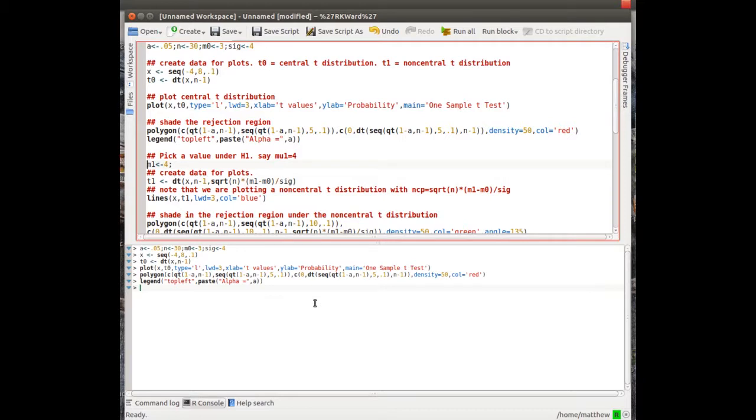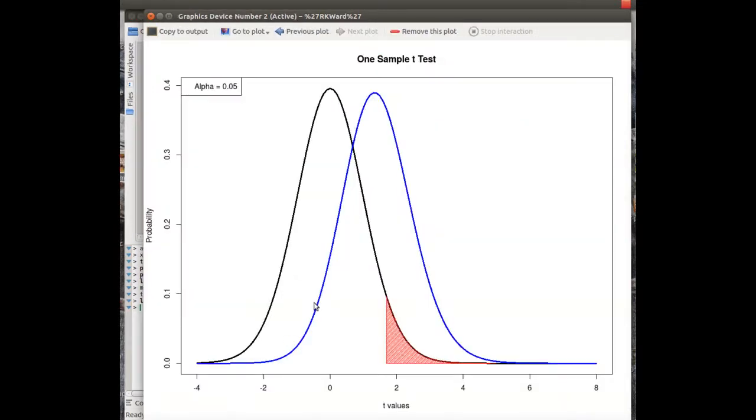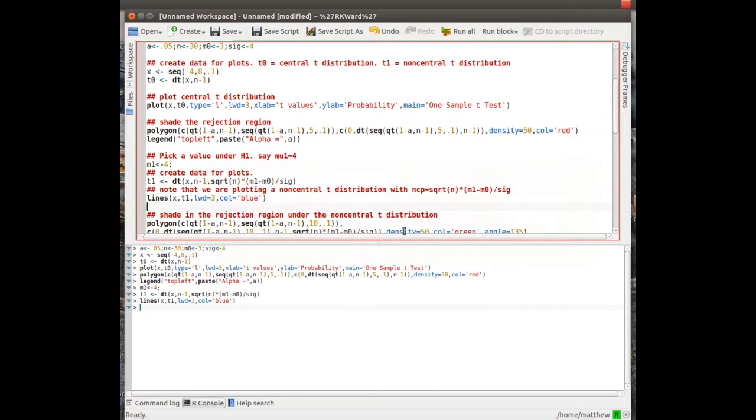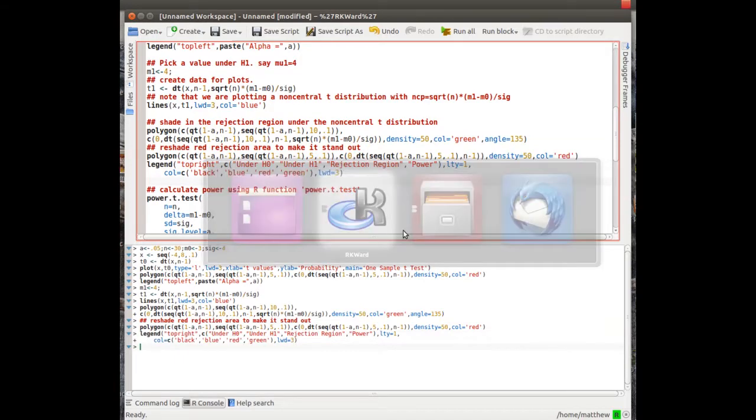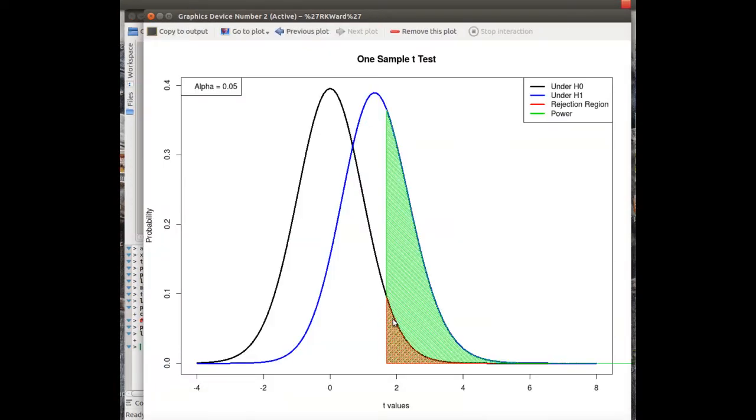I want to plot this distribution to show you. When we assume that 4 is true and not 3, the distribution shifts. To calculate the probability that we reject, meaning in this region, we're under this curve here. Let me illustrate that graphically. This green area is now the probability that we reject the null hypothesis, given that the true value of μ is 4.